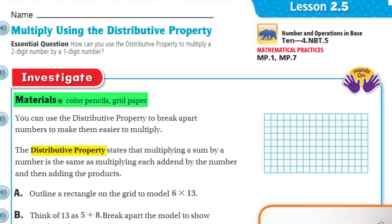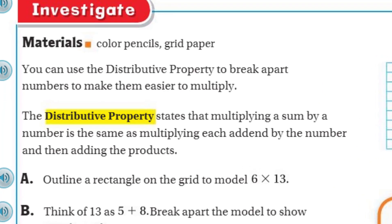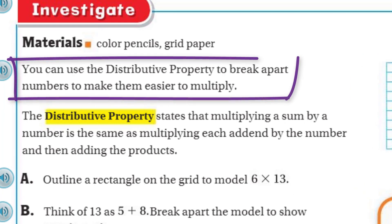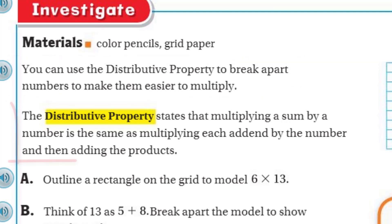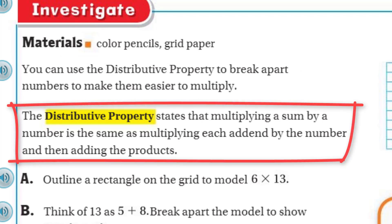We're going to need some materials. If you have these at home or at school, you should pull them out. You're going to need coloring pencils and grid paper. If you don't know what that is, you can see in the picture there, that's an example of a little section of grid paper. It does say you can use the distributive property to break apart numbers to make them easier to multiply. The distributive property states that multiplying a sum by a number is the same as multiplying each addend by the number and then adding the products.